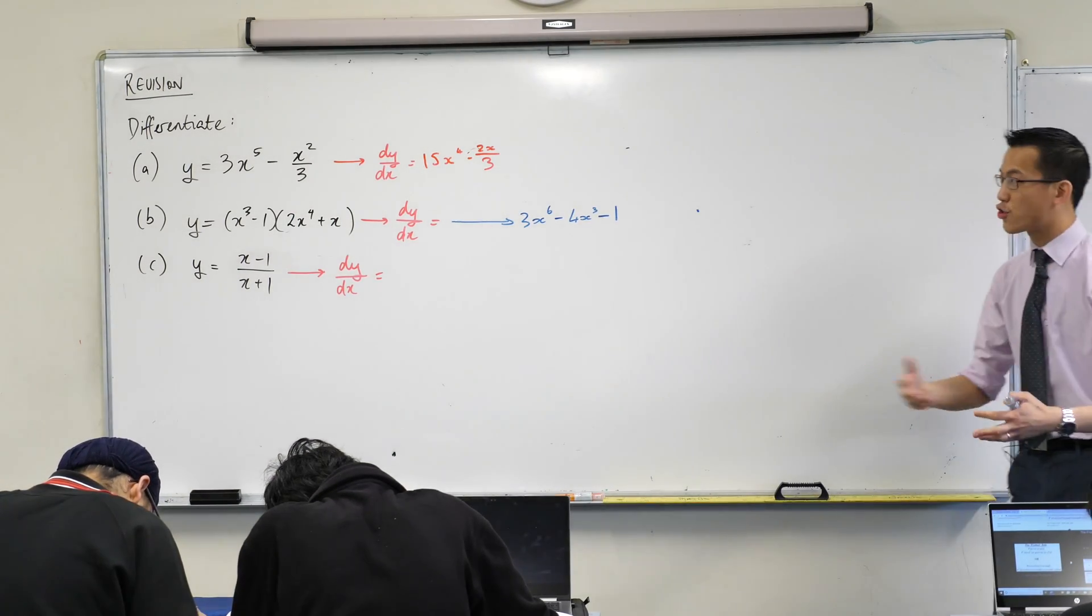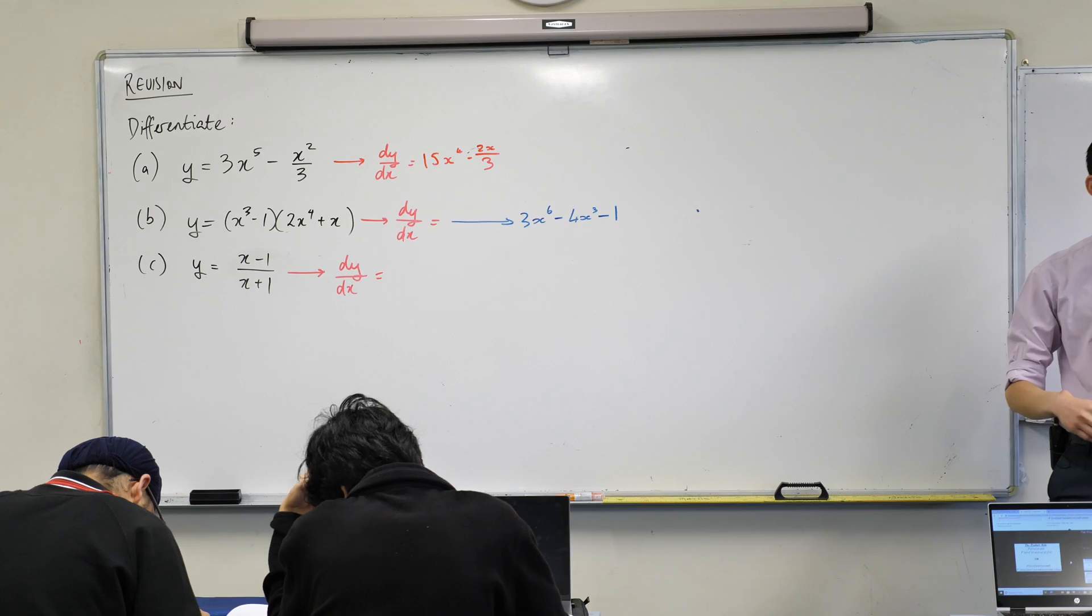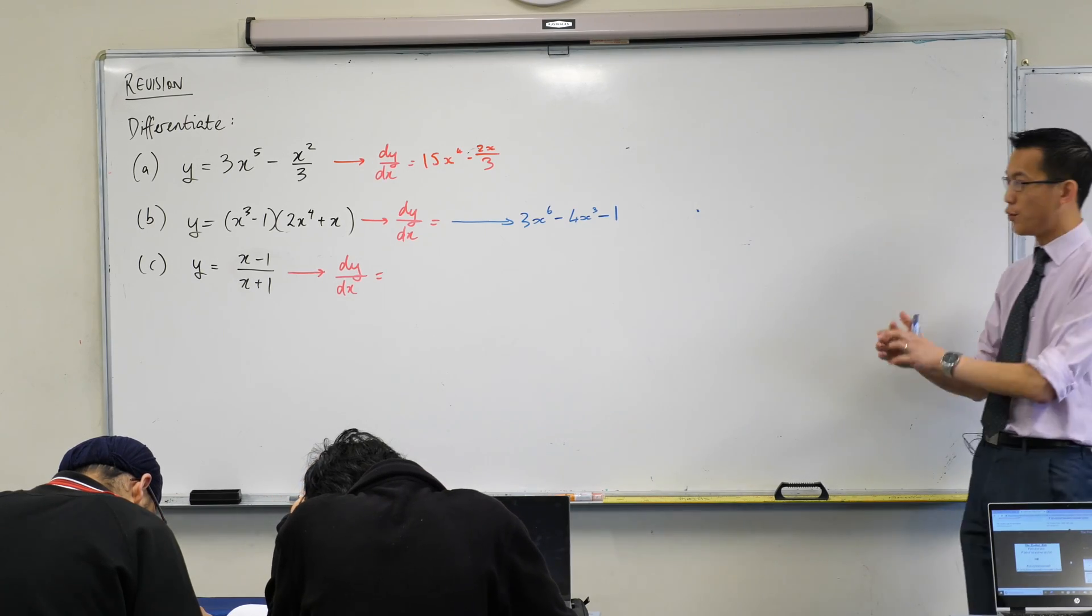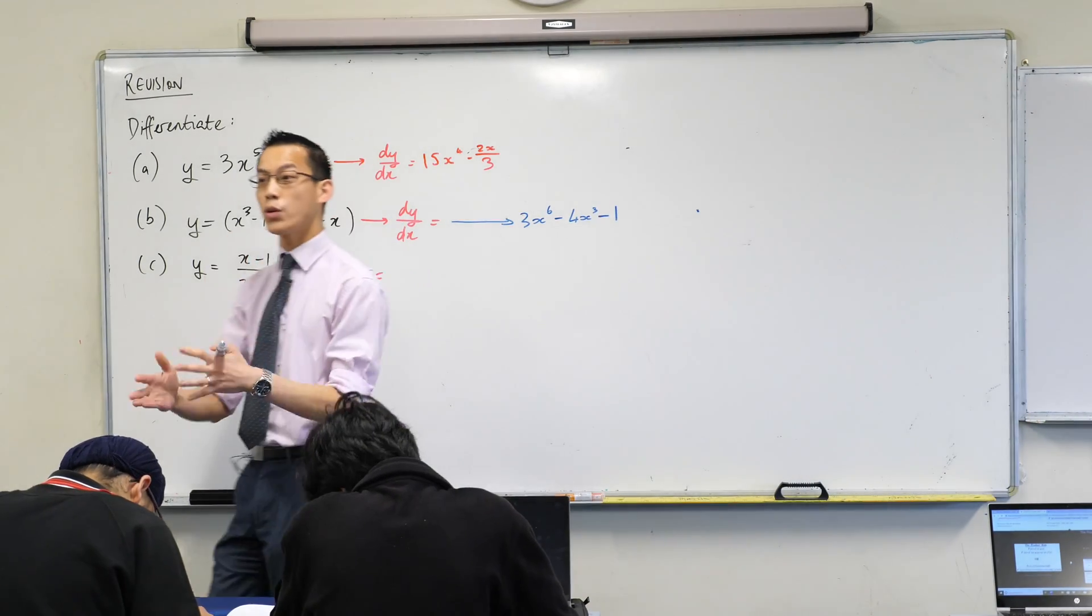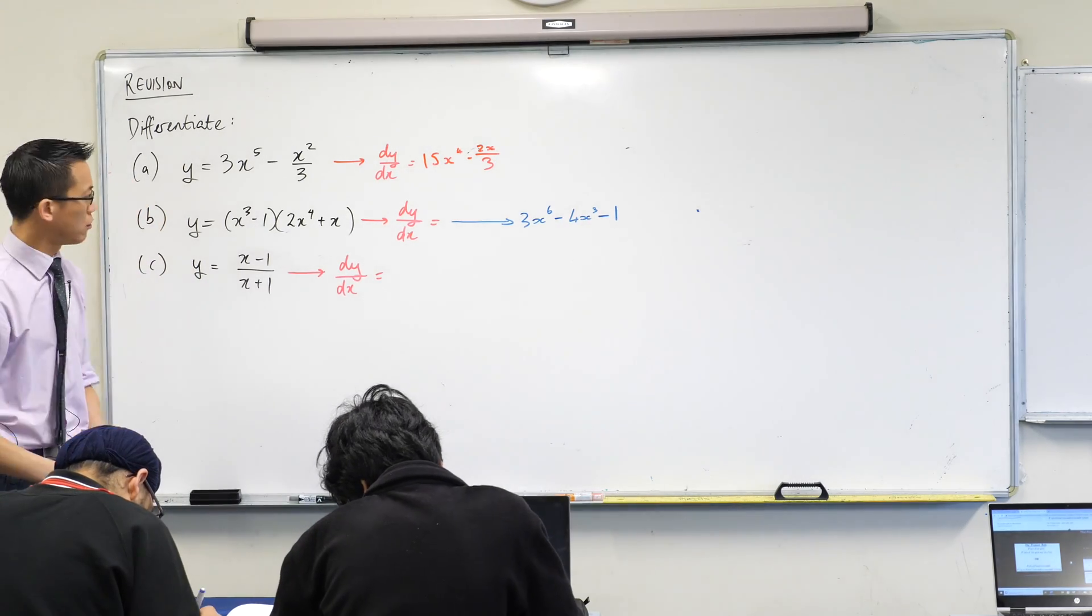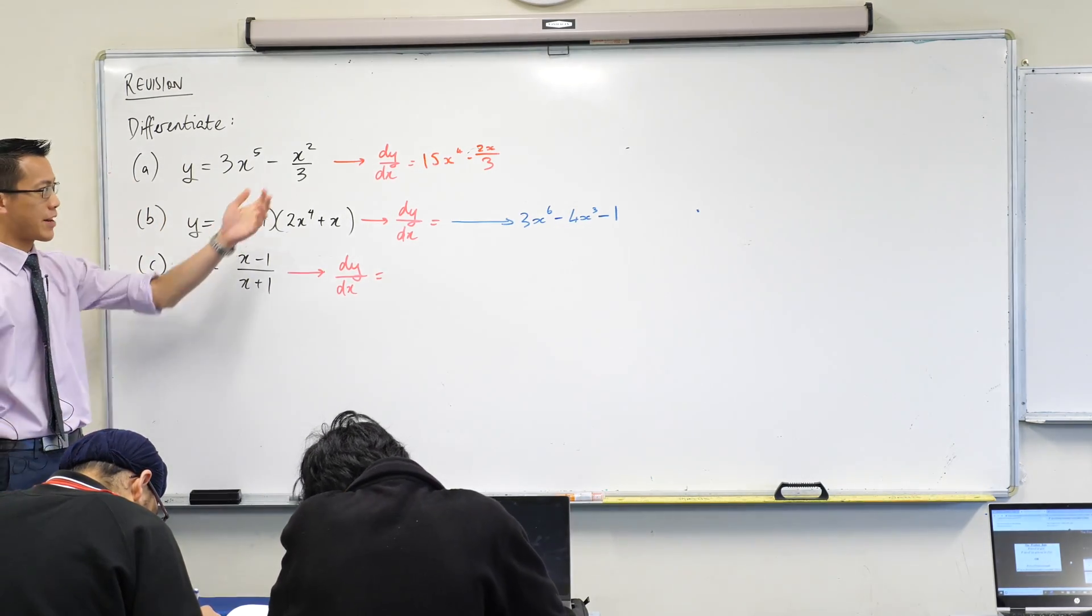This is about as straight a derivative as you could be given at this point. Yes I know there's a few twists and turns in there but not too many because all you need to do is use your power rule and use it twice. So what do you reckon?